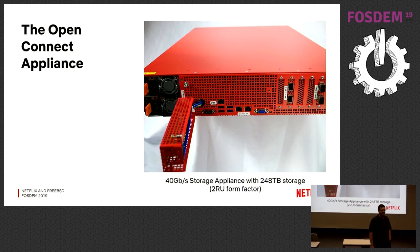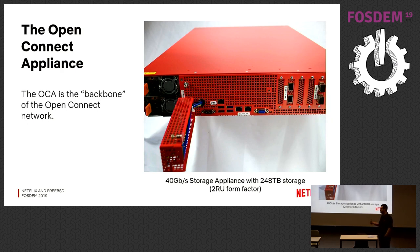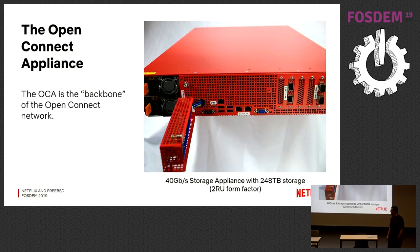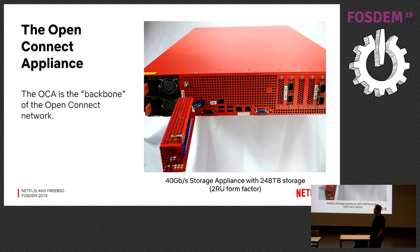The heart of our CDN is our content caches — you could almost say they are the backbone of the Open Connect network. They deliver more than 100 terabits per second at peak. You see here a picture of one of our storage appliances from a few years ago: the 40 gigabit per second attached storage appliance with 248 terabytes of storage in a 2RU form factor. Our highest-end production appliance currently delivers 100 gigabits per second in a 1RU form factor.